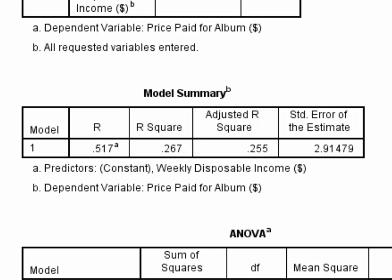Part of the purpose of regression is to build a model that can be used to make predictions. In this case, the model contains just one variable — weekly disposable income — and that's being used to predict the prices that customers paid for the album. Because the model is not perfect, and disposable income can't account for all of the variance in prices paid, any predictions made with it will be off or inaccurate to some degree. The standard error of estimate is a measure of how much we'd expect predictions to be off on average — in this case, by $2.91.